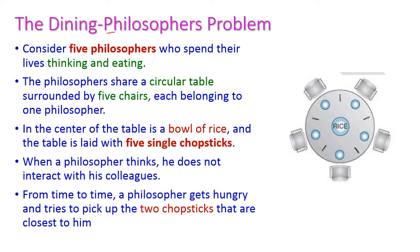Dining philosopher problem: Consider 5 philosophers who spend their lives thinking and eating. For that, they will share a circular table and 5 chairs surrounding this table, each belonging to one philosopher — 1, 2, 3, 4, 5. In the centre of the table, a bowl of rice is placed and 5 chopsticks are there on the table — chopsticks 1, 2, 3, 4, 5.